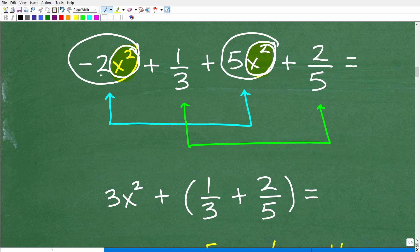So in this case, we have negative 2 and 5. So negative 2 plus 5 is what? Well, that would give us a 3x squared.